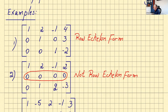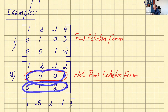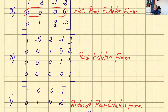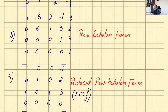Just to remember: a column containing a leading one is called a pivot column — that term will be helpful when solving systems later. Example two has a row entirely of zeros, but it's not at the bottom of the matrix — it would need to be there. So this is not row echelon form, and of course not reduced row echelon form either.